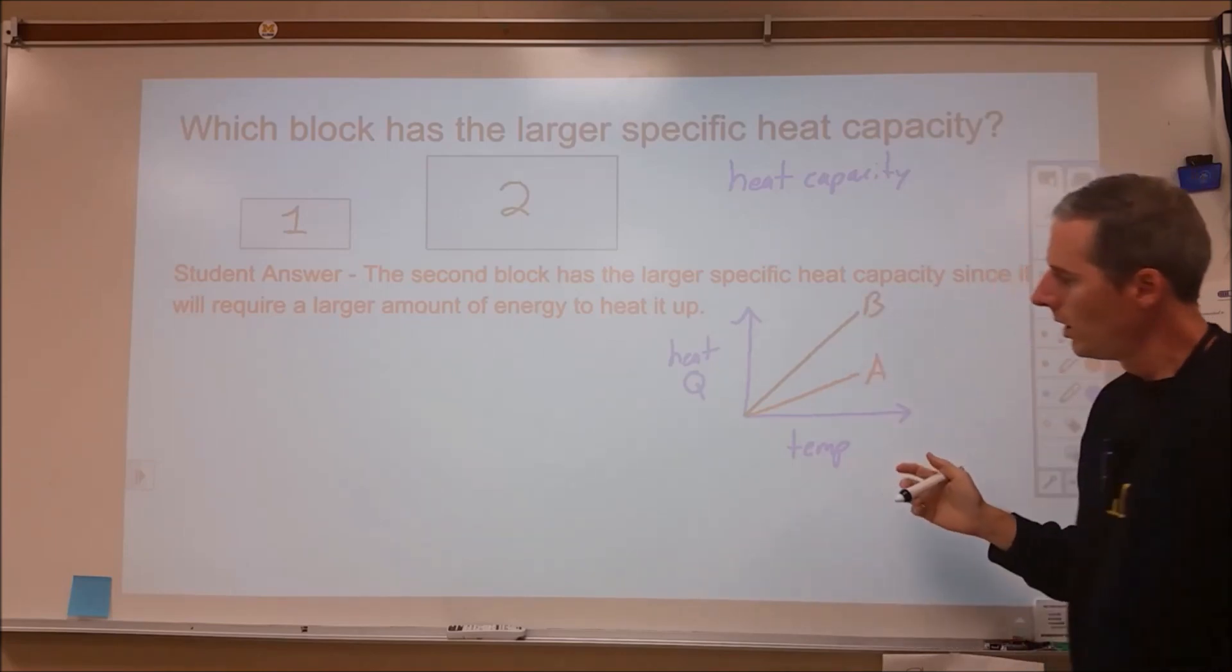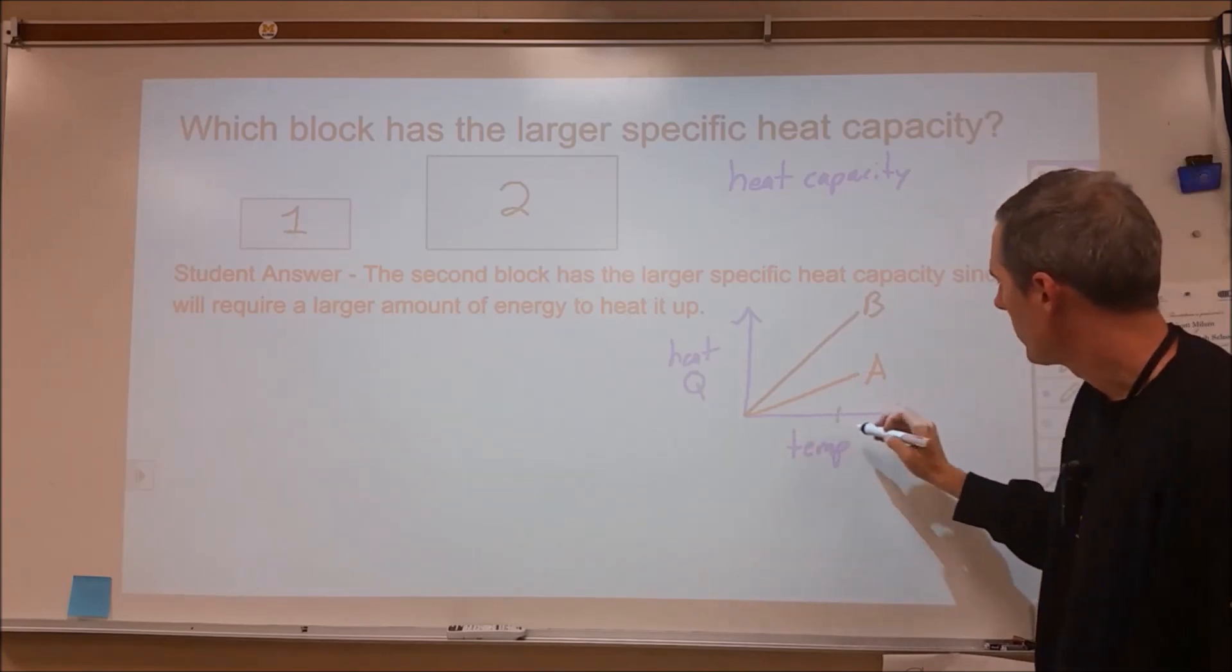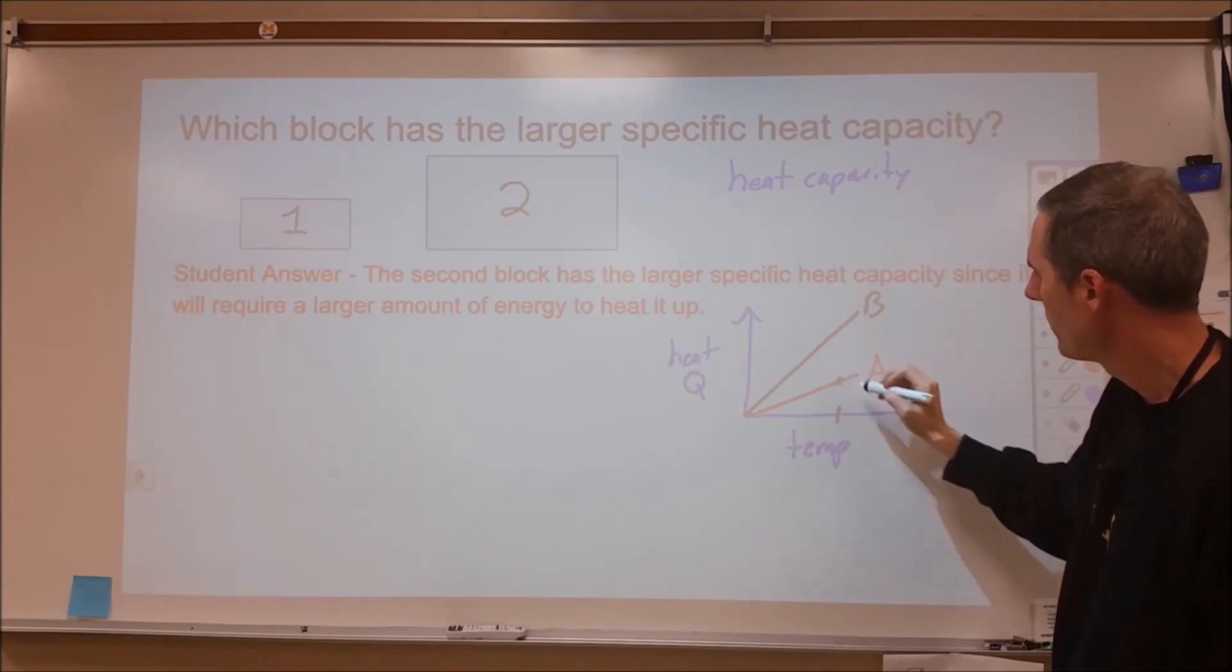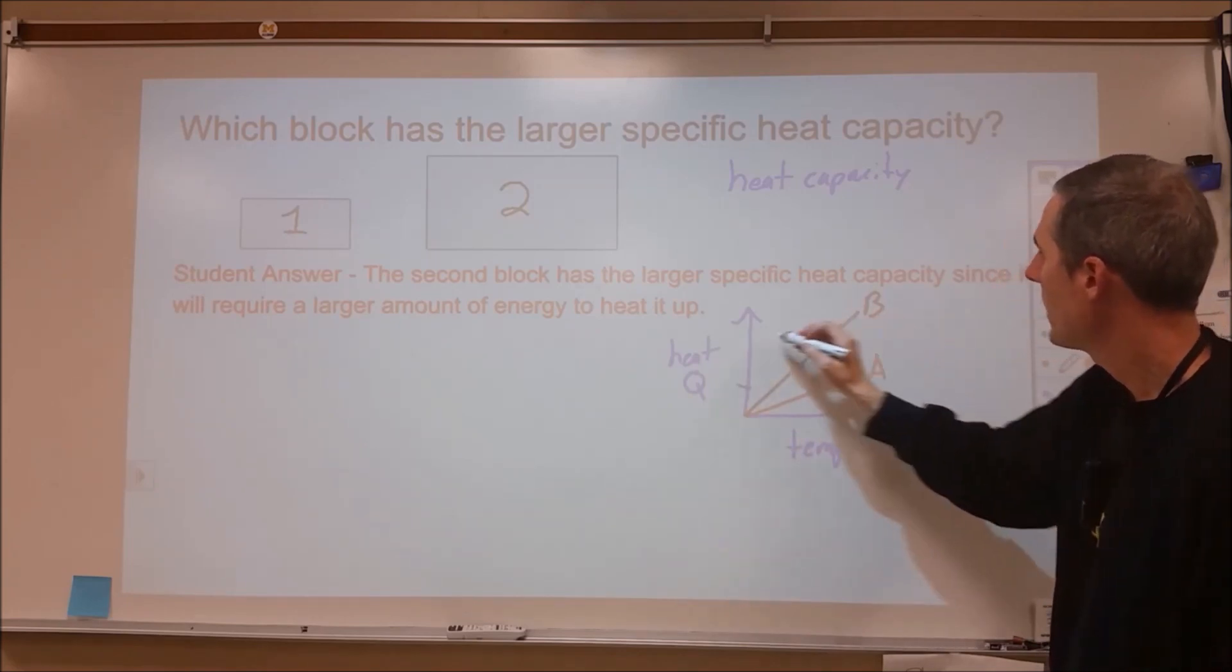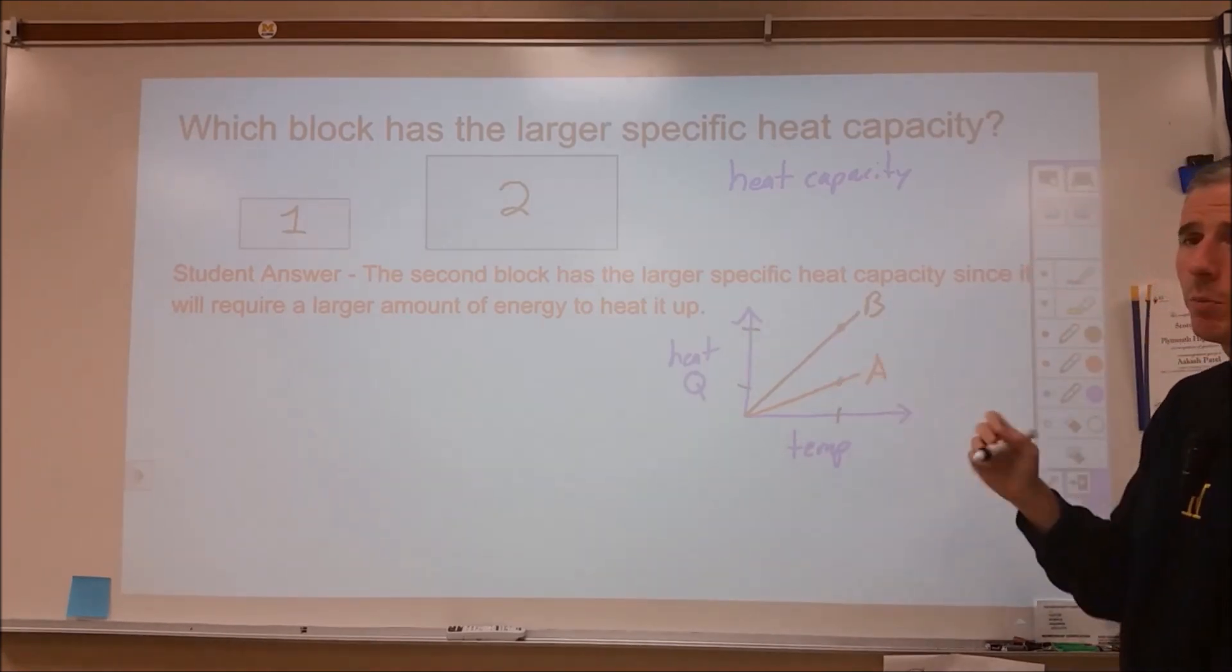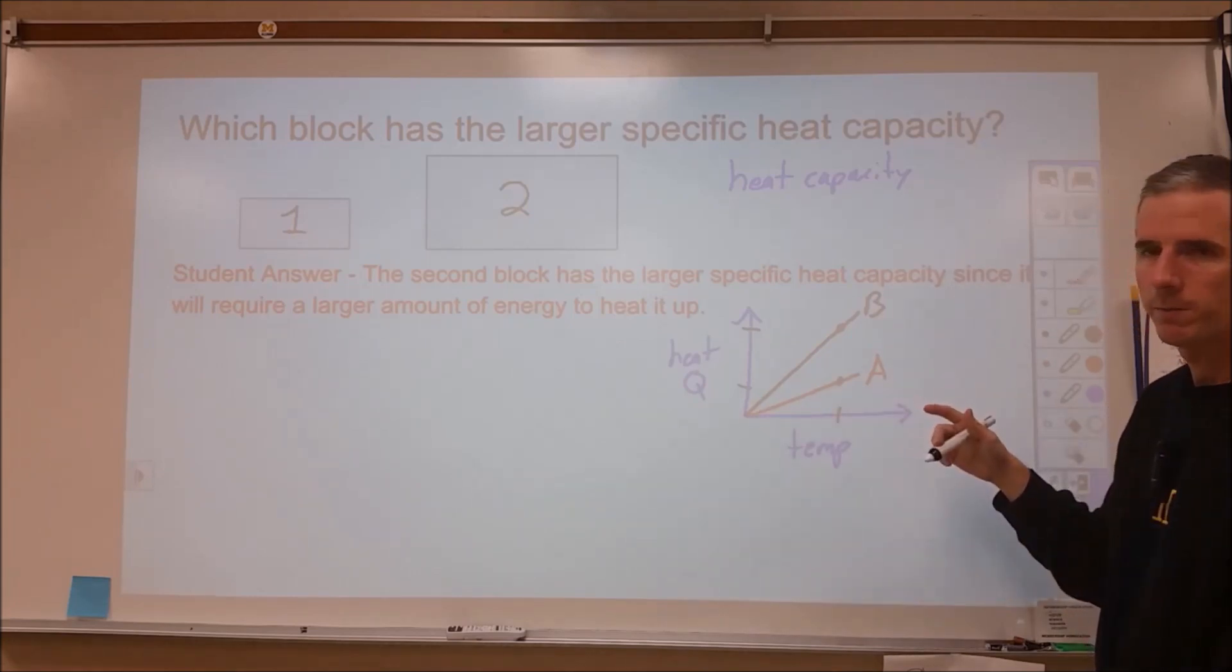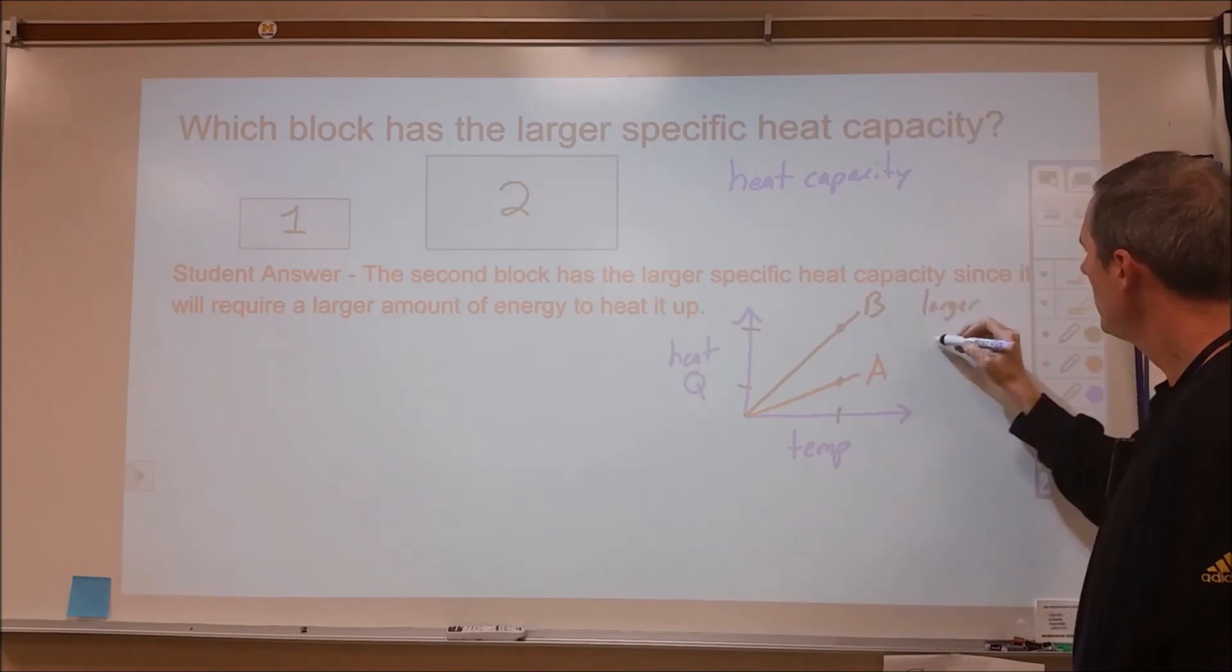Let's have substance B and substance A here. We have changed their temperature the same amount from here to here, but A has had a certain amount of energy required to do that, and B has had a much larger amount of energy to change its temperature. B is more challenging or requires more energy to change temperature by the same amount. That would mean that B has a larger heat capacity.